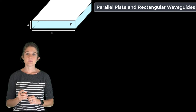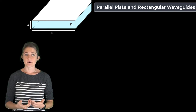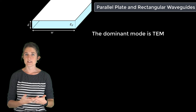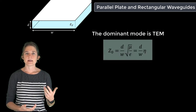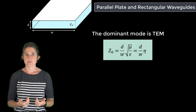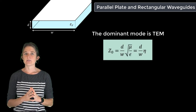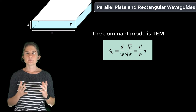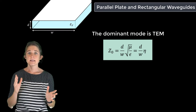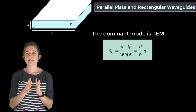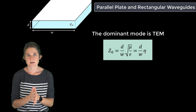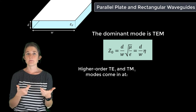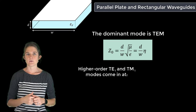The characteristic impedance Z0 of the dominant mode in a parallel plate waveguide, which is TEM, is given by d over w times the square root of mu over epsilon, or eta. In a parallel plate waveguide, TE and TM modes come in simultaneously, so both TE1 and TM1 begin to propagate at the first higher order mode cutoff frequency.